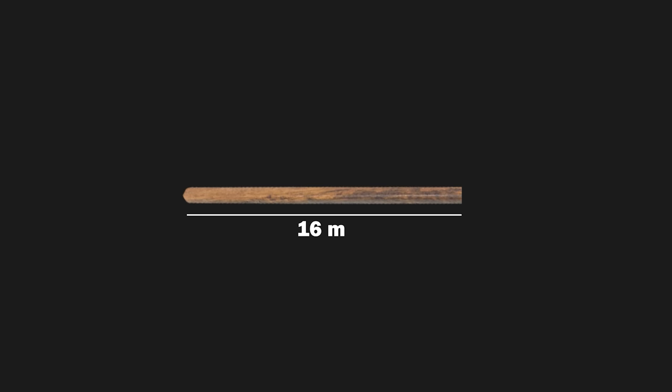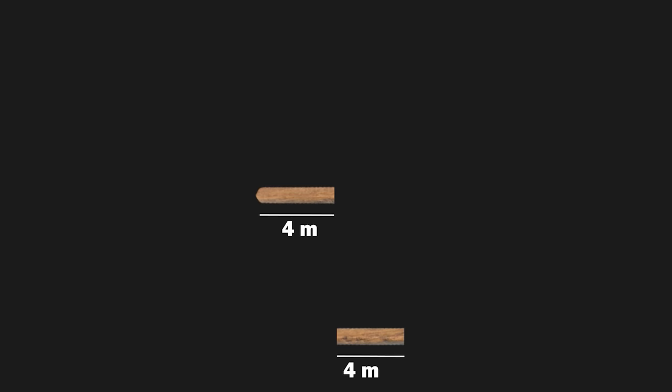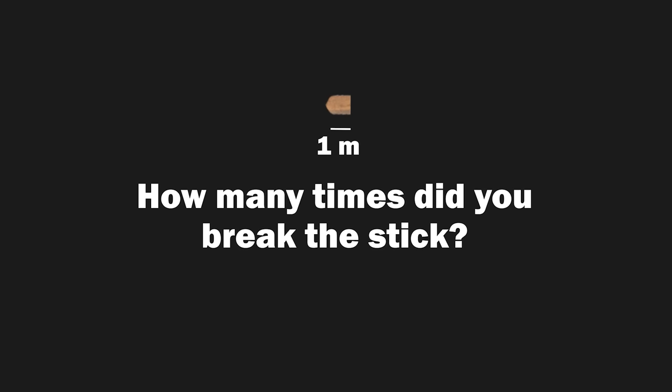So here is a question for you. You are given a stick that is 32 meters in length. You break it into two halves. You throw the right piece away and you break the left piece into two halves again. You throw away the right half and keep breaking the left piece until you have a stick of length 1 meter left. How many times did you break the stick in total? You can pause the video and leave the answer below.